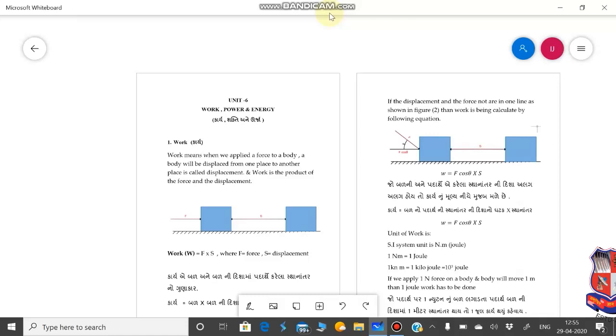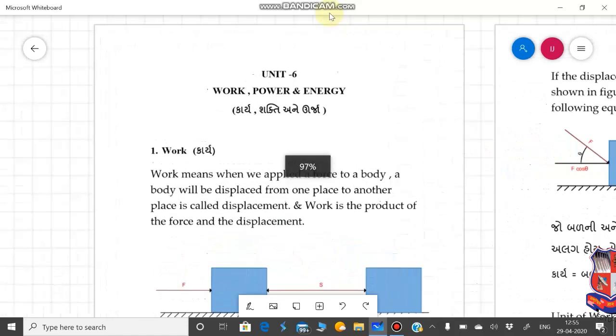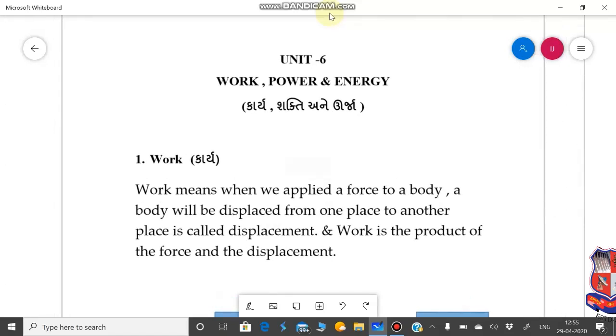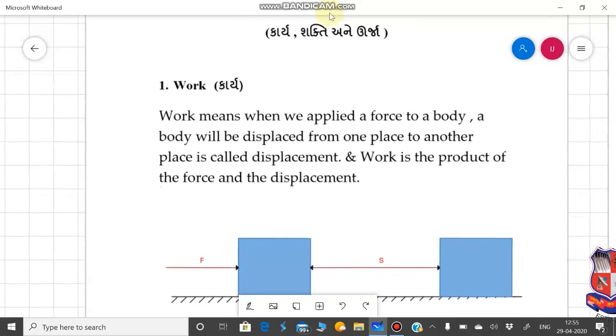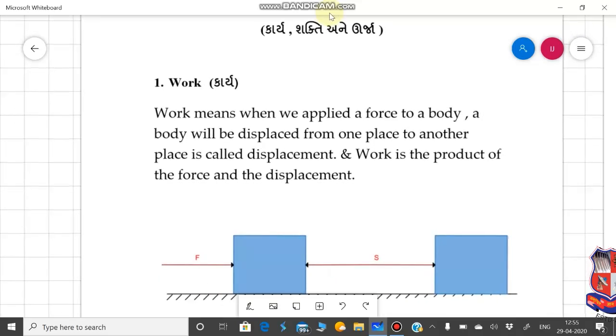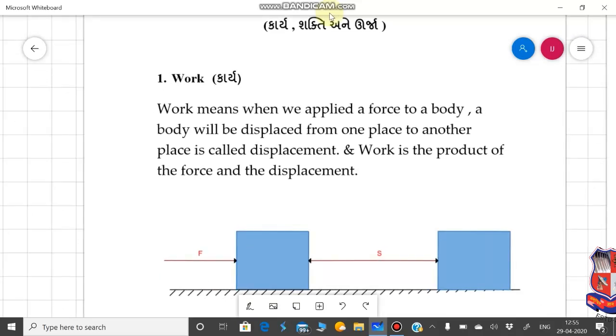Hello friends. In our previous video, what is the definition of work? Work means we applied a force on a body. Body will displace from one place to another place. It is called displacement. And work is the product of force and displacement.